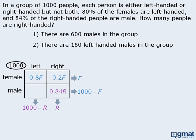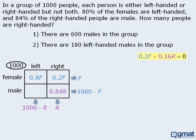Here comes a very important part. From our diagram, we can see that the sum of the two right-handed boxes must equal r, so we can write an equation. We can rewrite this equation with all variables on one side. The question asks us to find the total number of right-handed people — in other words, the value of r.